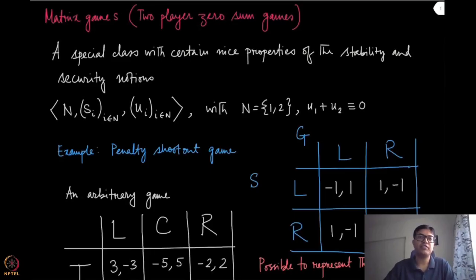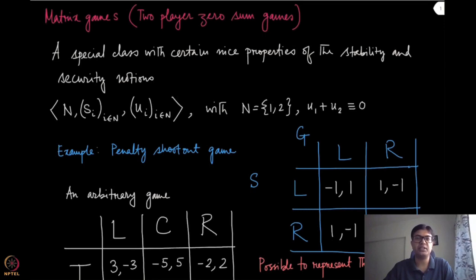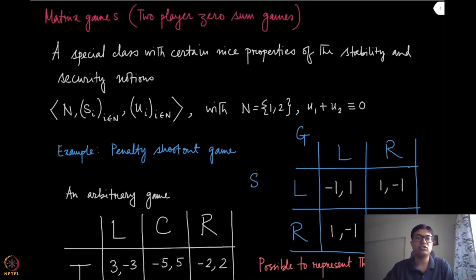Now let us look at a very special kind of game: the matrix games. This is also known as the two-person zero-sum game, which spells out the whole paradigm clearly — there are only two players and their utility sums to zero. We study this kind of game because there are certain very interesting results involving the stability notion of pure strategy Nash equilibrium and the security notion of maxmin strategies, and we will see a nice interplay between these two in this kind of game.